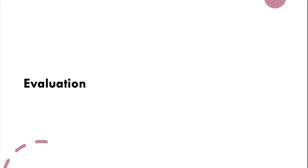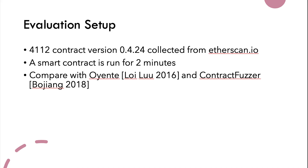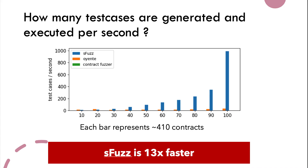We conducted many experiments to evaluate the effectiveness of Sfuzz. We ran Sfuzz against 4,112 smart contracts collected from the website etherscan.io, with each smart contract run for 2 minutes. We then compared with Oyente, a well-known symbolic execution tool, and ContractFuzzer, which is similar to Sfuzz. On average, Sfuzz generates and executes about 200 test cases per second, compared to Oyente's 16 per second and ContractFuzzer's around 6 per minute. On average, Sfuzz is 13 times faster than Oyente and ContractFuzzer.